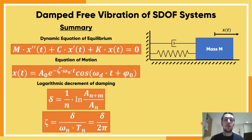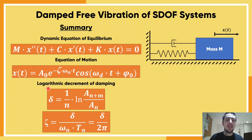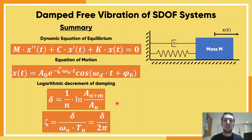In summary, we looked at the dynamic equation of equilibrium and added the c times x-dot term — the damping coefficient times velocity written as the derivative of position. We also looked at the equation of motion and added the exponential decay term. Then we used the exponential decay as a method to find how much damping we have in our structures, obtaining that experimentally through the logarithmic decrement of damping. It's important to have these equations in mind, know how to apply them, and understand what the logarithmic decrement is for. Thank you for watching, and have a good one.